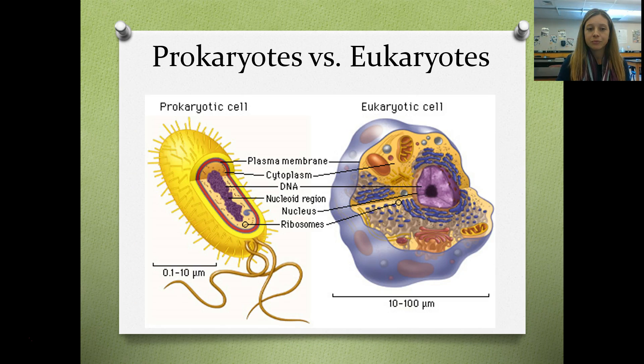Here is a quick illustration of the very simple prokaryotic cell compared to the much more complex and larger eukaryotic cell. This would be an example of an animal cell.